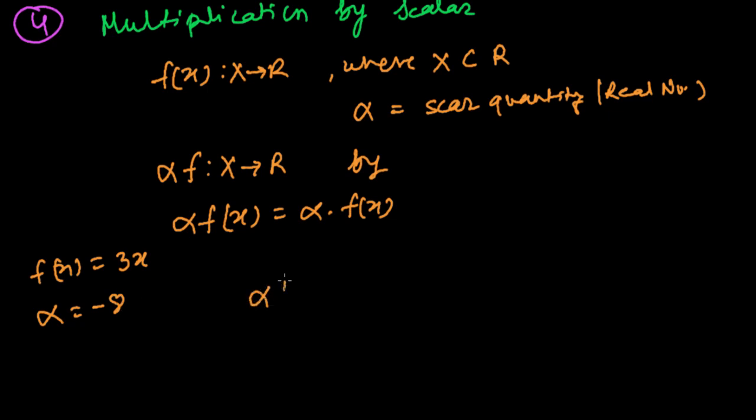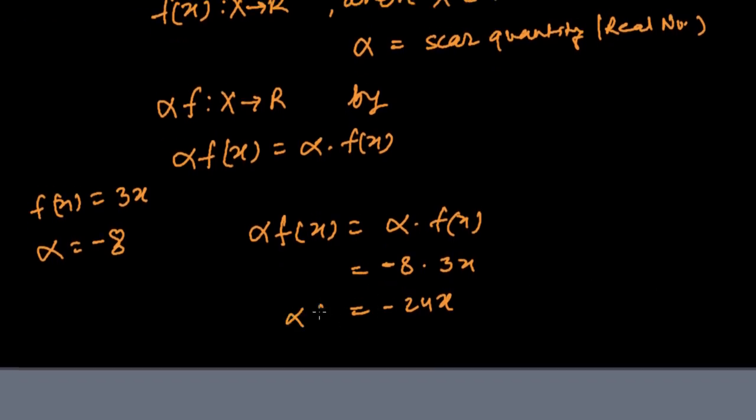So then alpha f(x) will be alpha times f(x). My alpha is minus 8 times f(x). f(x) is 3x, so it's going to be minus 24 times x. So we get alpha f(x) equals minus 24x.